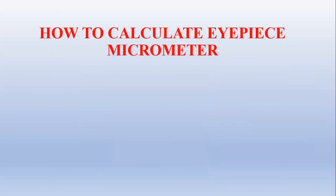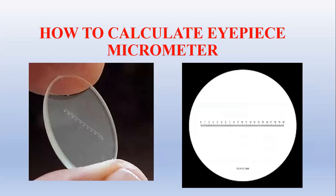Today we see how to calculate or perform calibration of the eyepiece micrometer. This is your eyepiece micrometer — we have to place this eyepiece micrometer into the eyepiece of the microscope. The second slide is there, which has a scale that is not calibrated, so calibration of the micrometer is required.